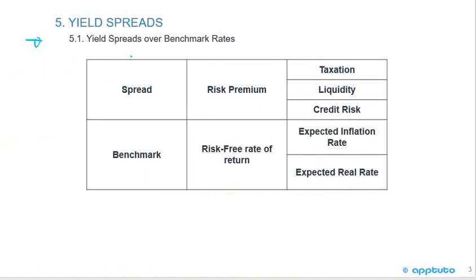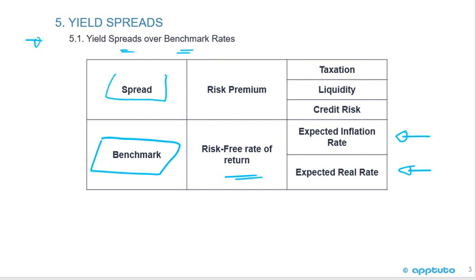Continuing with yield spreads, we're going to look at yield spreads over the benchmark rate. We start with the benchmark, which we call the risk-free rate of return, built up from the expected real rate plus the expected inflation rate. On top of that, we add the spread for various bond types. For a corporate bond, the spread is based on a risk premium made up of credit risk plus liquidity risk plus taxation, creating a spread over the benchmark rate.